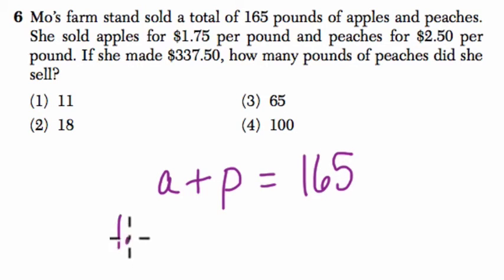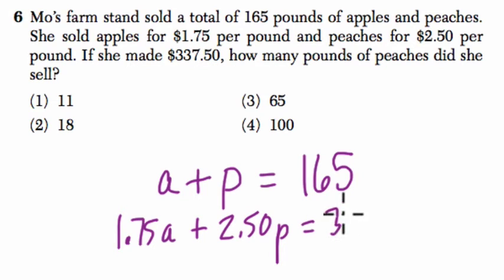And then the price of apples is $1.75 per pound and the price for peaches is $2.50 per pound, and the total amount she's making is $337.50. And we want to know how many pounds of peaches did she sell.